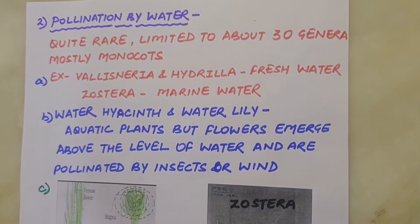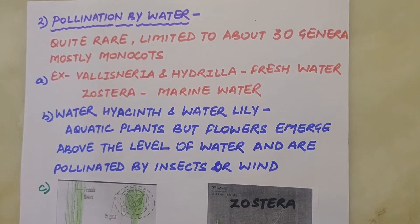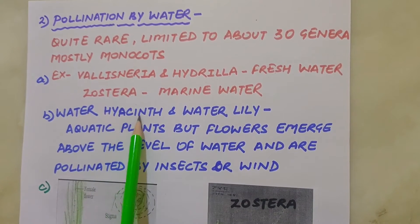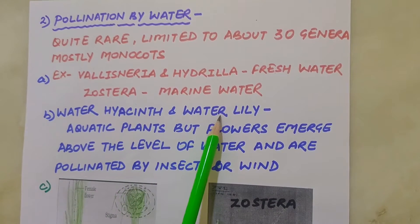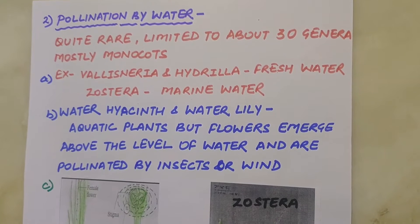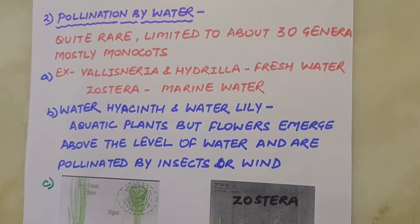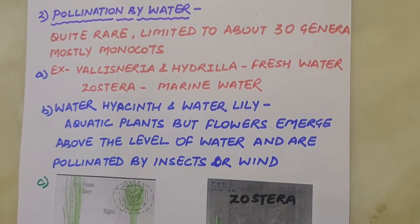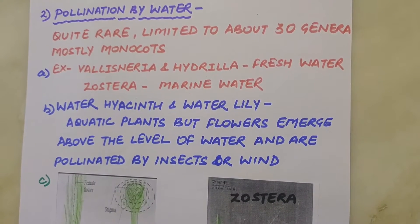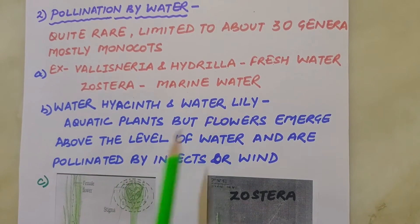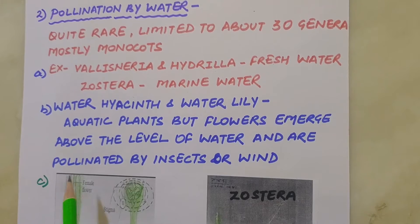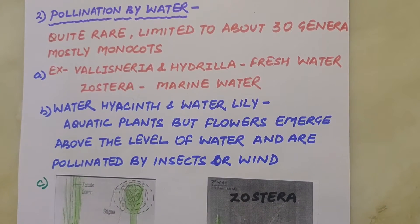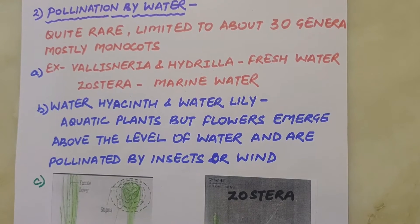Not all aquatic plants use water for pollination. In majority of aquatic plants such as water hyacinth and water lily, the flowers emerge above the level of the water and are pollinated by insects or wind, as in most land plants. Both these plants are aquatic, but pollination in them occurs through wind or insects because their flowers are quite above the water surface.